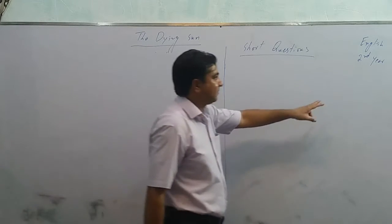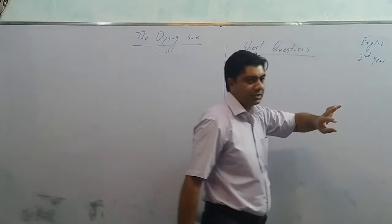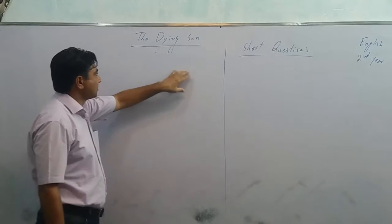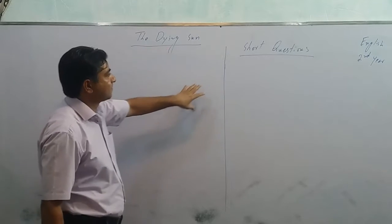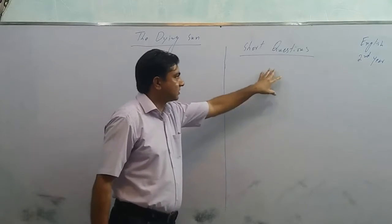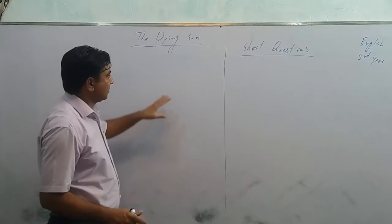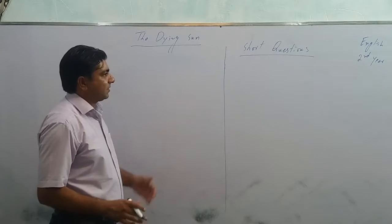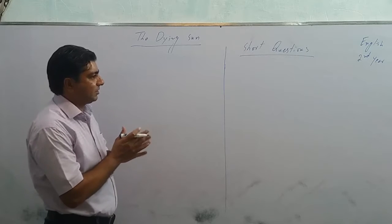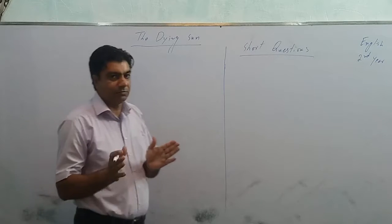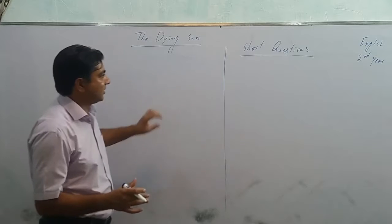Students, this is Bilal Adir for the subject of English, second year. This is the last lecture about the lesson 'Dying Sun.' We will discuss short questions based on this lesson. First of all, let's remind what information we had gathered from this essay.